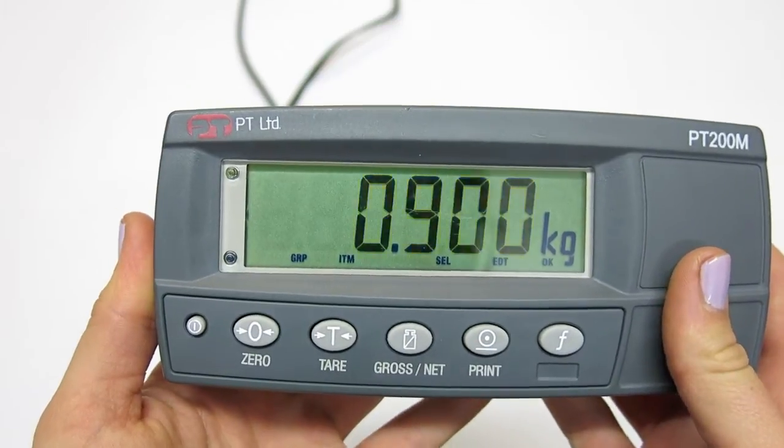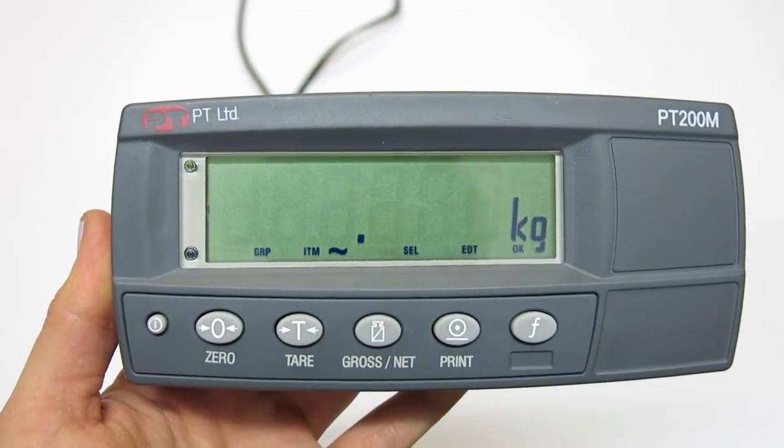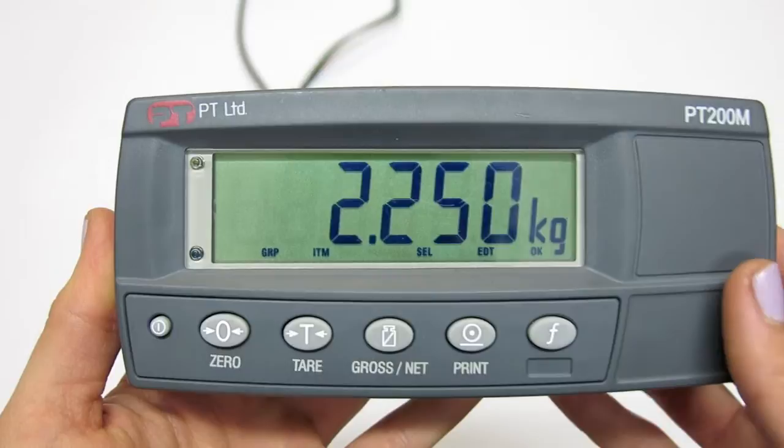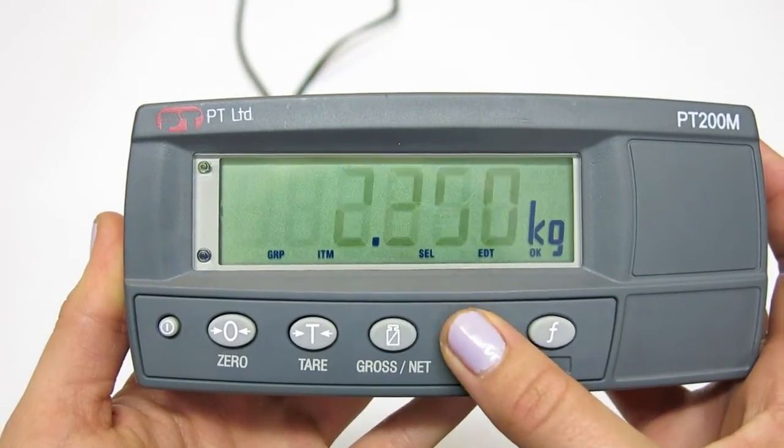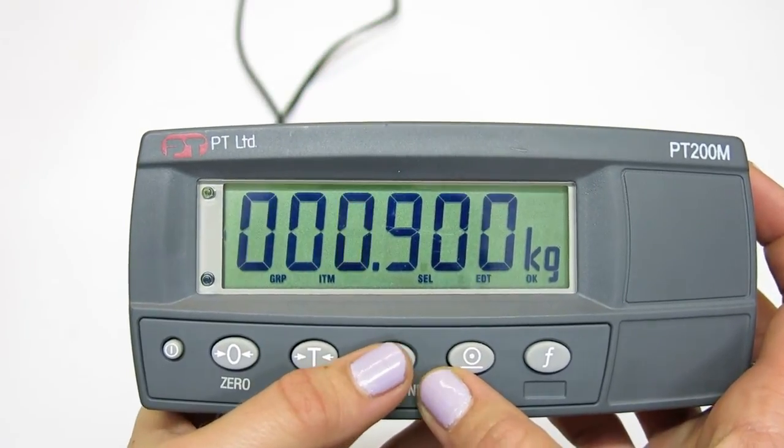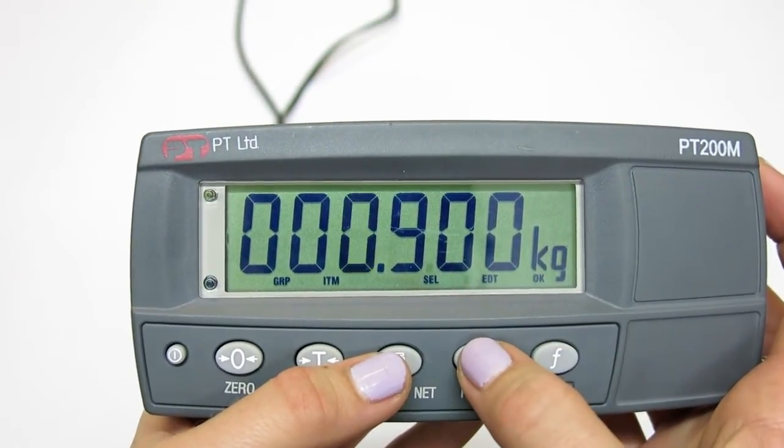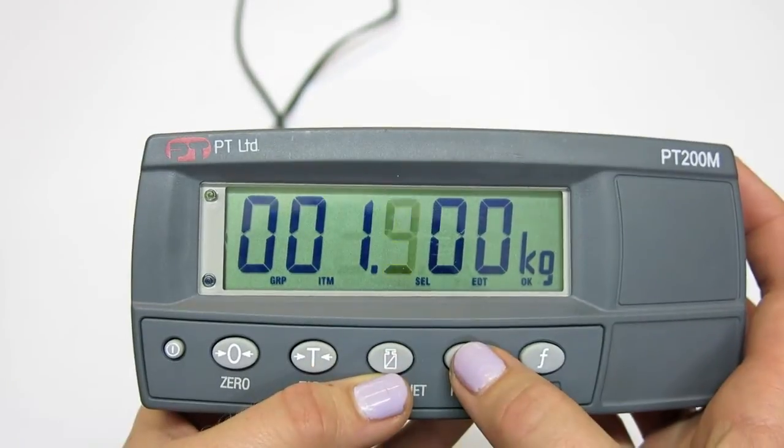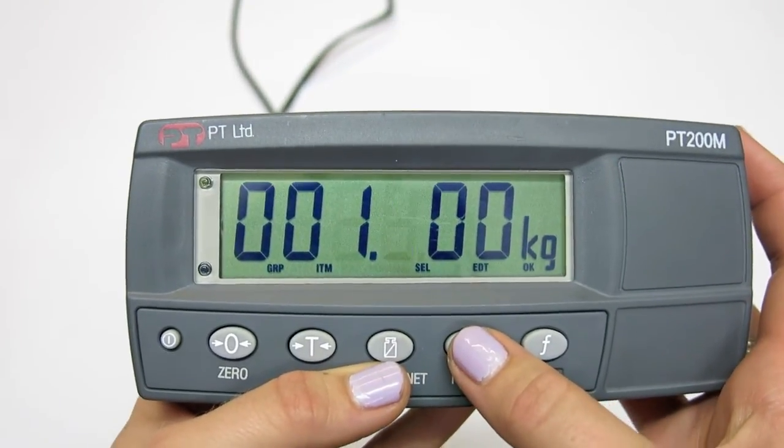Now load your known weight onto the scale and press edit to edit this value. Select the net or gross button to select which number and the edit or print button to alter the number. Enter the number of your load.